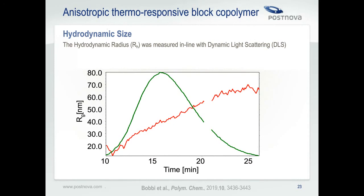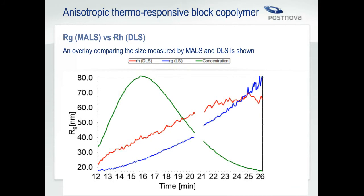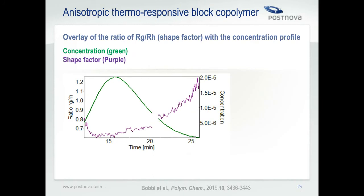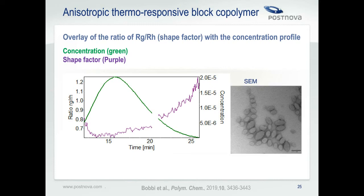Bringing the batch DLS data back into view, it told us we have a single population of particles about 102 to 103 nanometers in diameter. Assuming spherical geometry, this falls on the FFF-MALS distribution at about 39 nanometers in radius, which clearly does not accurately represent the full picture of particle size. The inline DLS shows time-resolved hydrodynamic sizes. Plotting the ratio of Rg to Rh can provide information about particle shape — when this ratio is around 0.7 to 0.8, it suggests a spherical particle geometry; when above 1, we see higher aspect ratio structures, with the extreme case being rod-like particles. The shoulder peak has a larger Rg to Rh ratio, suggesting the larger population is likely not spherical — exactly what electron microscopy confirms, providing a nice visual confirmation of what was measured by AF4-MALS-DLS.